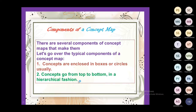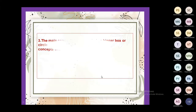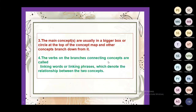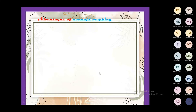The main concept always comes at the top, and from it we gradually move downward. The main concepts are usually in a bigger box or circle at the top of the concept map, and other concepts branch down from it. The verbs on the branches connecting concepts are called linking words — also called linking phrases — which connect two main concepts and denote the relationship between them.